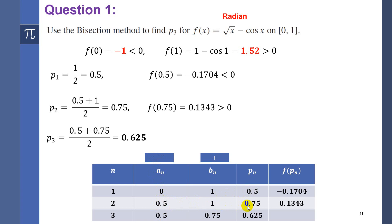P2 = (a2 + b2)/2 = (0.5 + 1)/2 = 0.75. F(0.75) is a positive value, so we take P2 and replace it in the positive column, giving us the new interval [0.5, 0.75]. Therefore, P3 = (0.5 + 0.75)/2 = 0.625.